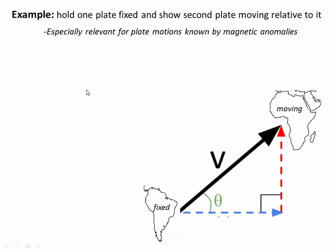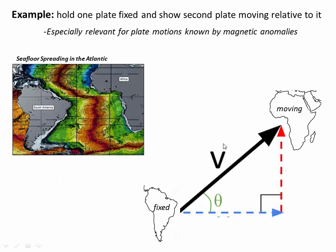One way, common in plate tectonics, is simply to hold one plate fixed and show a second plate moving relative to it. So in this case, we'll hold South America fixed as our origin and we'll draw a velocity vector that shows Africa moving away from it at some direction and rate. And this is a natural thing to do, especially when you're working with data from seafloor spreading, because we don't know exactly the velocity of this ridge. The ridge itself could be moving in some direction, but we do know that if we hold South America fixed, Africa is moving this way at some rate that is defined by the magnetic anomalies. So this is a common approach if you're dealing with seafloor spreading data.